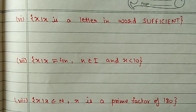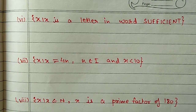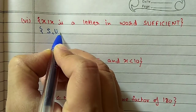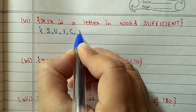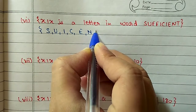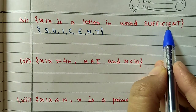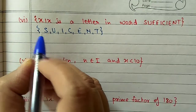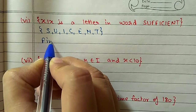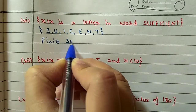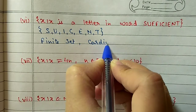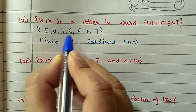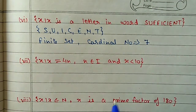Part (vi): {x such that x is a letter in the word 'sufficient'}. The letters used are S, U, I, C, E, N, T. F appears 2 times and I also appears 2 times, but we write each only once in set notation. Counting the distinct letters: 1, 2, 3, 4, 5, 6, 7 - so 7 elements are there. This is a finite set and the cardinal number is 7.